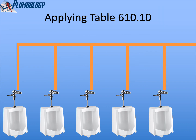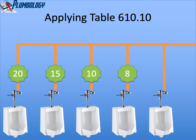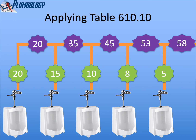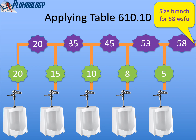And then finally, five urinal flush valves. Same decreasing scale starting with 20, next is 15, the third is 10, then 8, and finally the fifth one is 5. Going back to do the pipe segments: start with 20, add 15 equals 35, add 10 equals 45, add 8 equals 53, add 5 equals 58. That branch would be sized for 58 water supply fixture units.